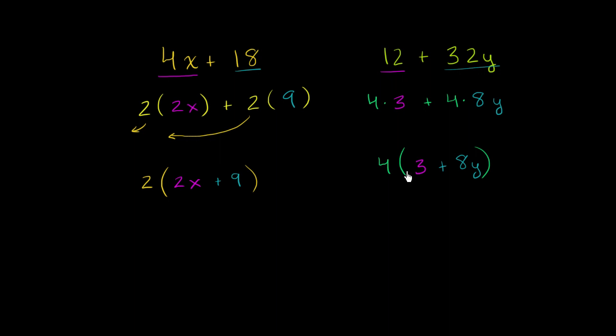And once you do more and more examples of this, you're going to find that you can just do this step all at once. You can say, hey, what's the largest number that's divisible into both of these? Well, it's 4. So let me factor a 4 out. 12 divided by 4 is 3. 32y divided by 4 is 8y.